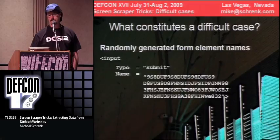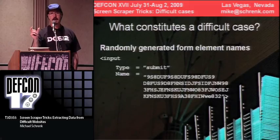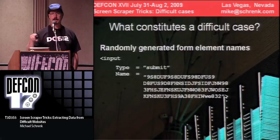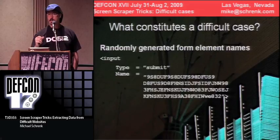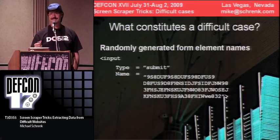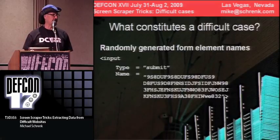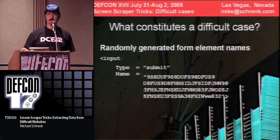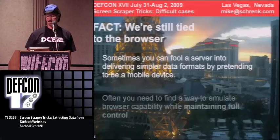One of my favorite difficult cases: instead of having a name for a form element, you'll get something like a 200-character hash that seems random. That makes it very difficult to emulate a form if you're looking for the form name. The comment was that this was made to prevent cross-site scripting techniques — for me it's just a pain, it makes it hard to write scrapers. But I'm going to show you how to defeat that.